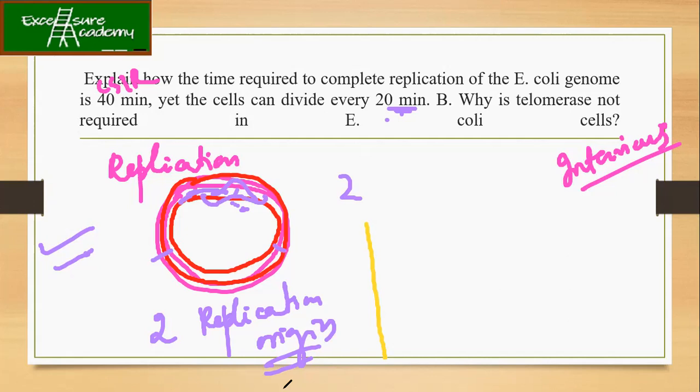The simple answer is telomerase is required for the end replication problem. If you remember in the case of eukaryotic chromosomes we have discussed about the end replication problem. We have studied a different topic of telomerase. Now do you think that E. coli has this end replication problem?